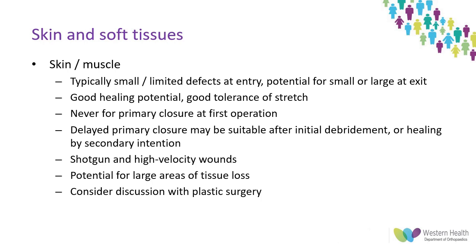The skin and muscle envelope is the most forgiving of the tissues involved in most gunshot wounds. The good blood supply, healing potential, and relative ability to tolerate stretch means they are best suited to recover, whether in the zone of permanent or temporary wound cavities. Immediate primary closure is contraindicated due to infection risk and the inability to definitively assess viable versus non-viable tissue. After an initial debridement, wounds may be closed as a delayed primary closure or allowed to heal by secondary intention. Shotgun wounds or high velocity bullet wounds have the potential for large areas of tissue loss, and plastic surgical input may be required once the true zone of injury has been demarcated with repeat debridement. Ultimately, the wound should be treated on its own merits, with the mechanism primarily guiding our understanding of the tissue damage and underlying physics.